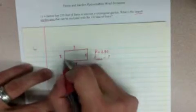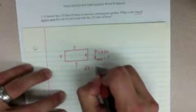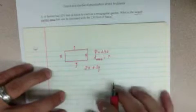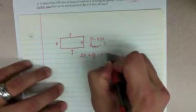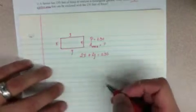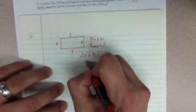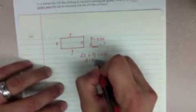Now, what do you know about perimeter? Perimeter is adding everything around. So we have our two X's plus our two Y's should equal 230 feet. Now, what else do we know? We know that area is equal to the length times the width.